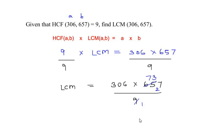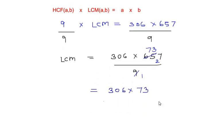So the numbers left are 306 times 73. Now you can use the long multiplication, so here...